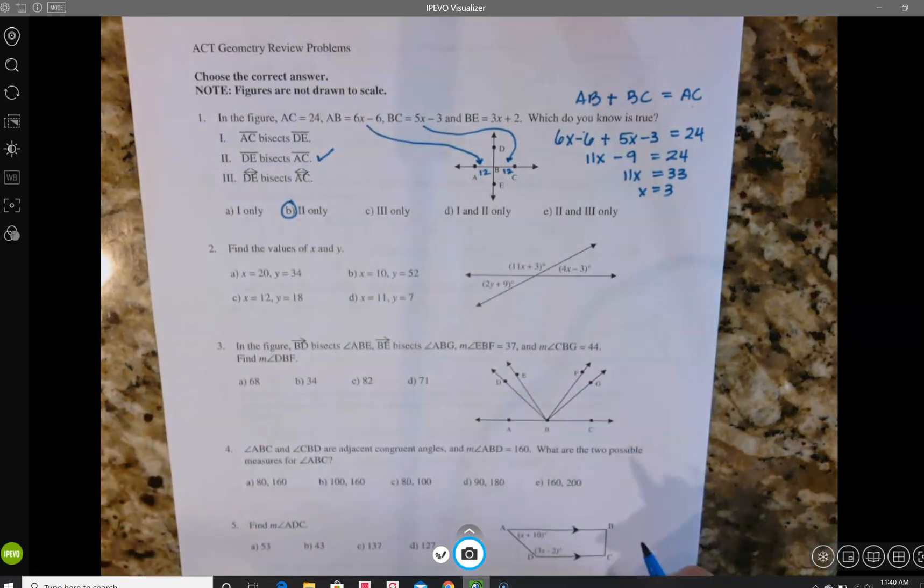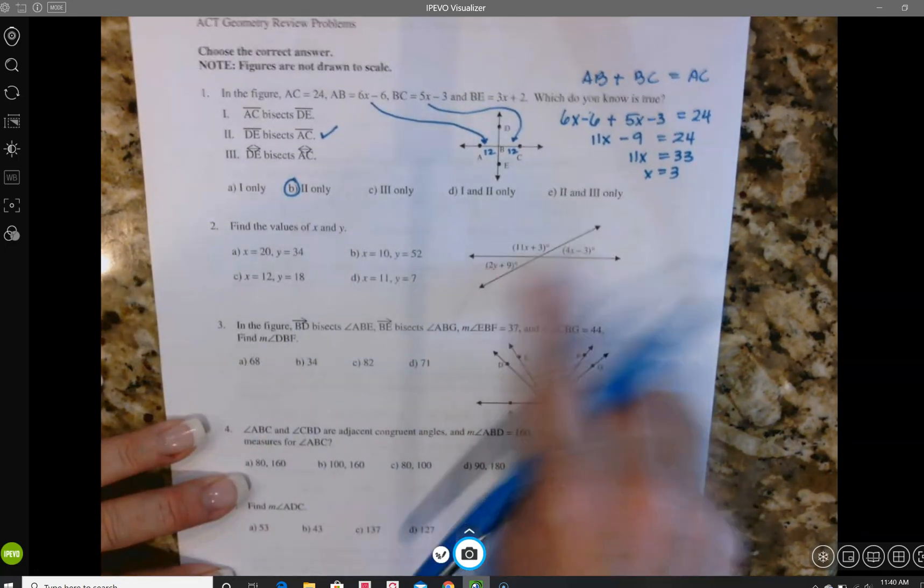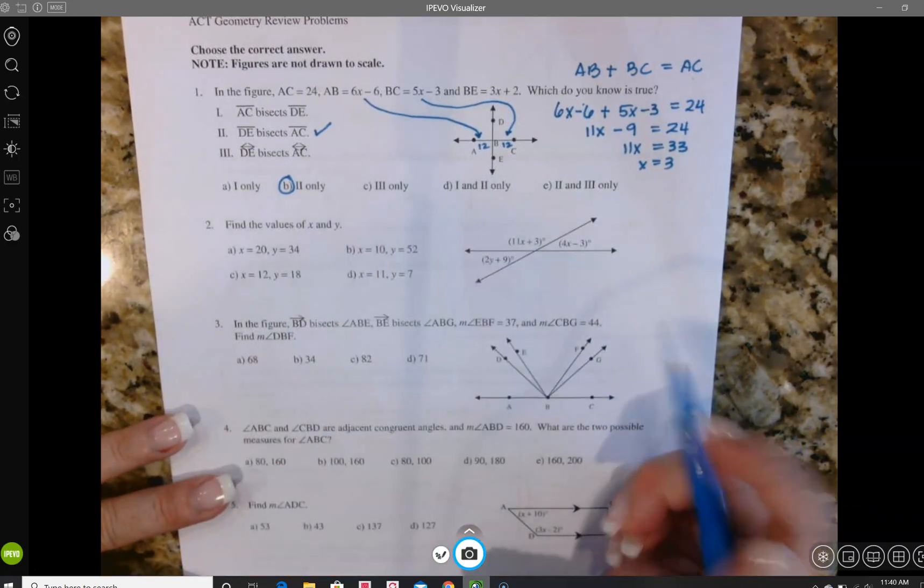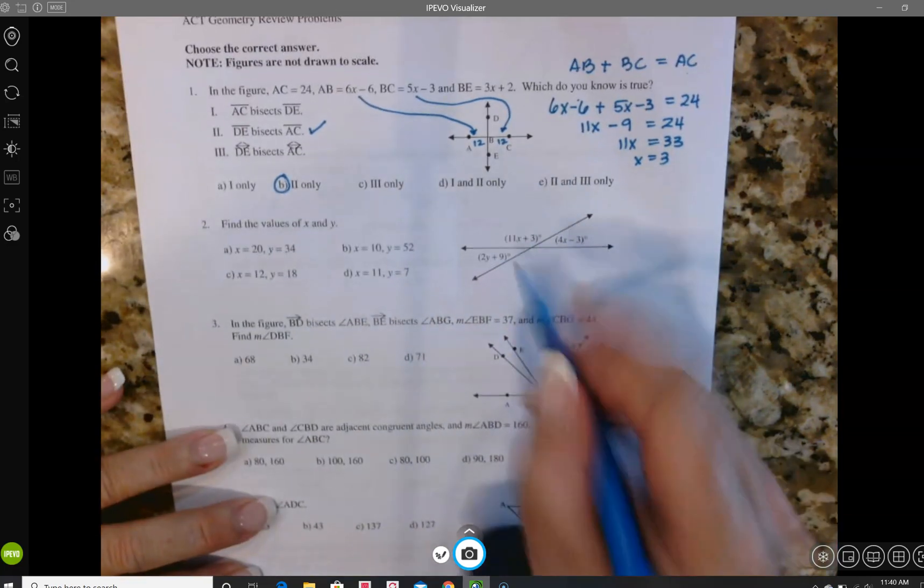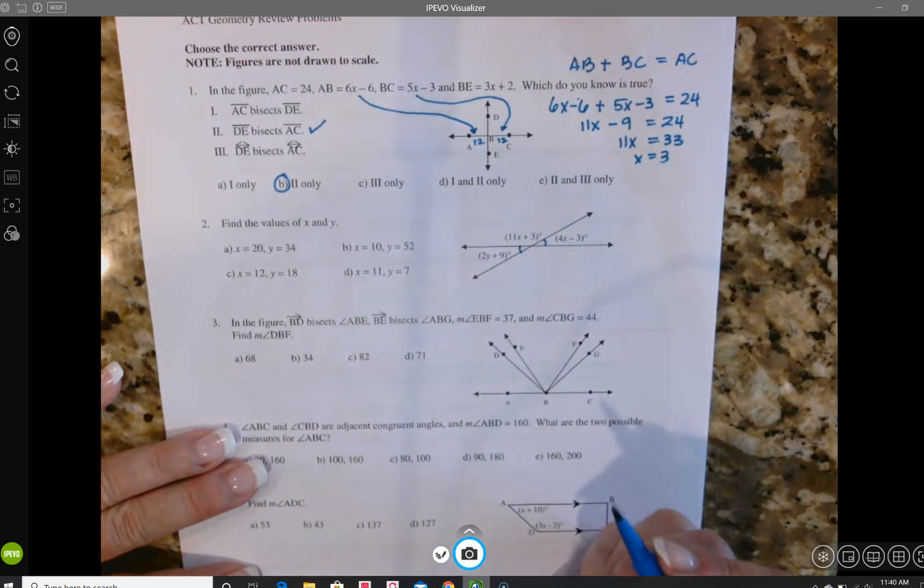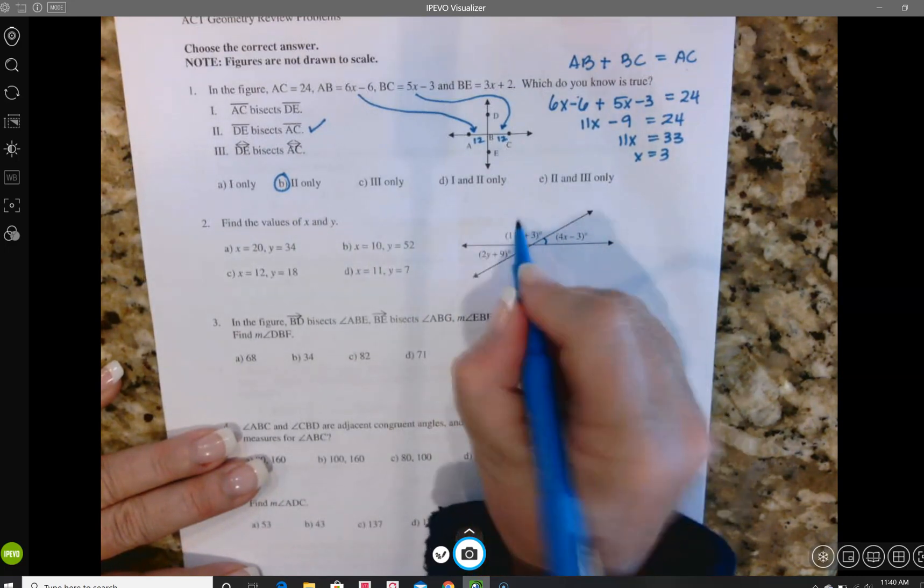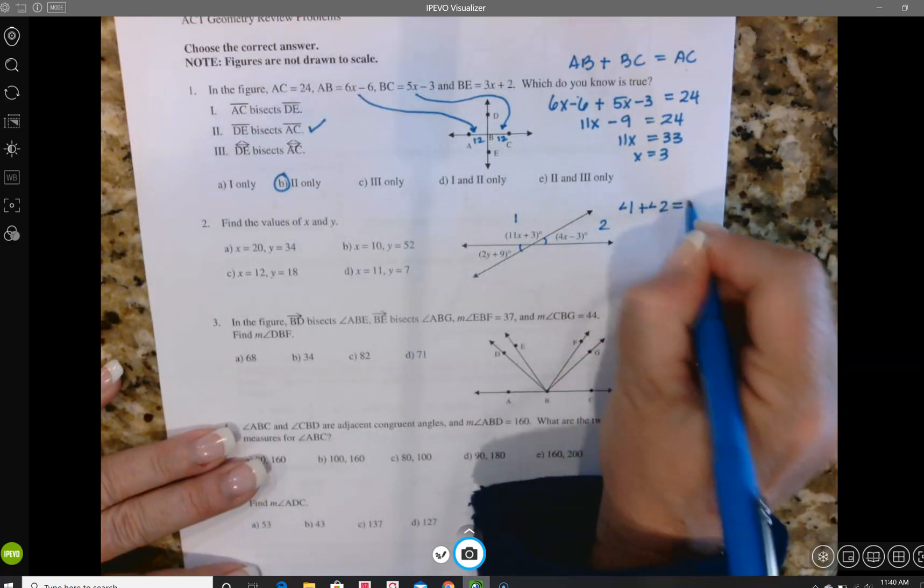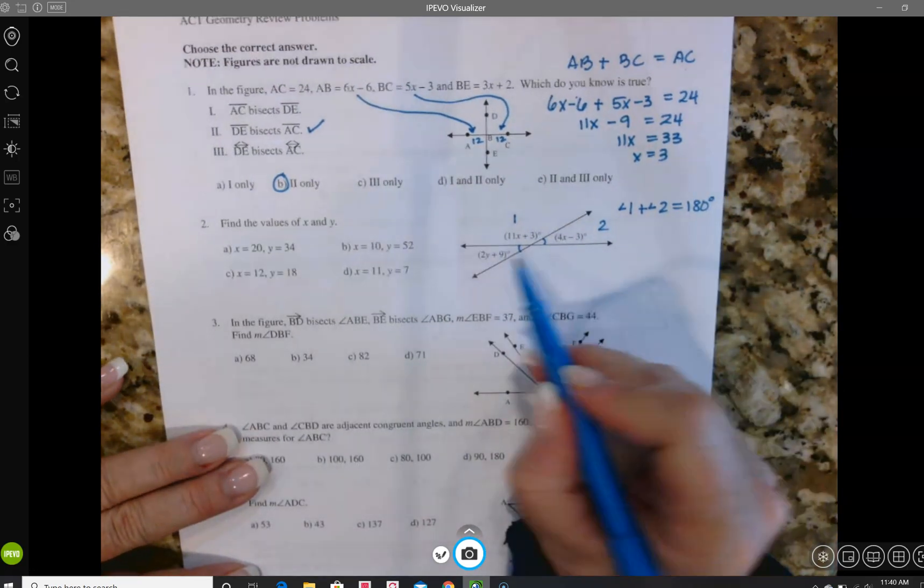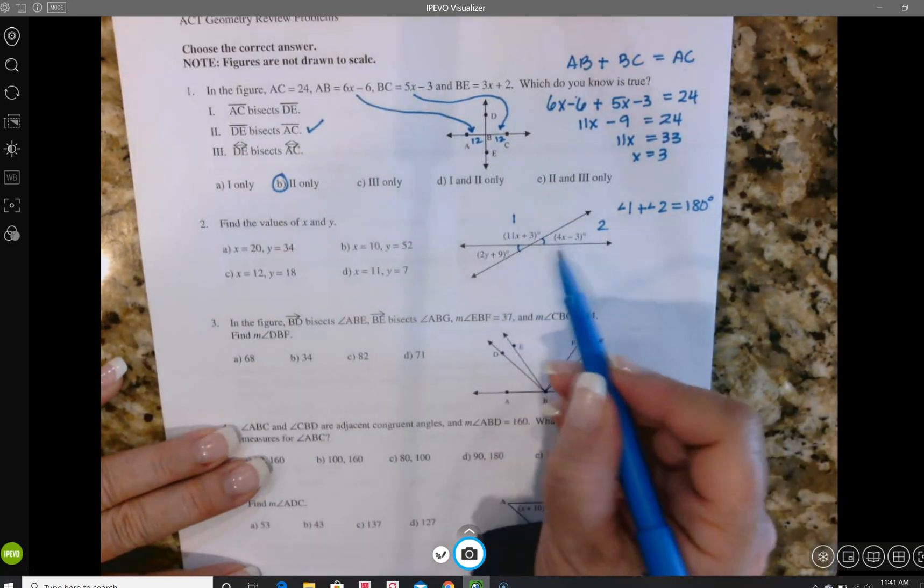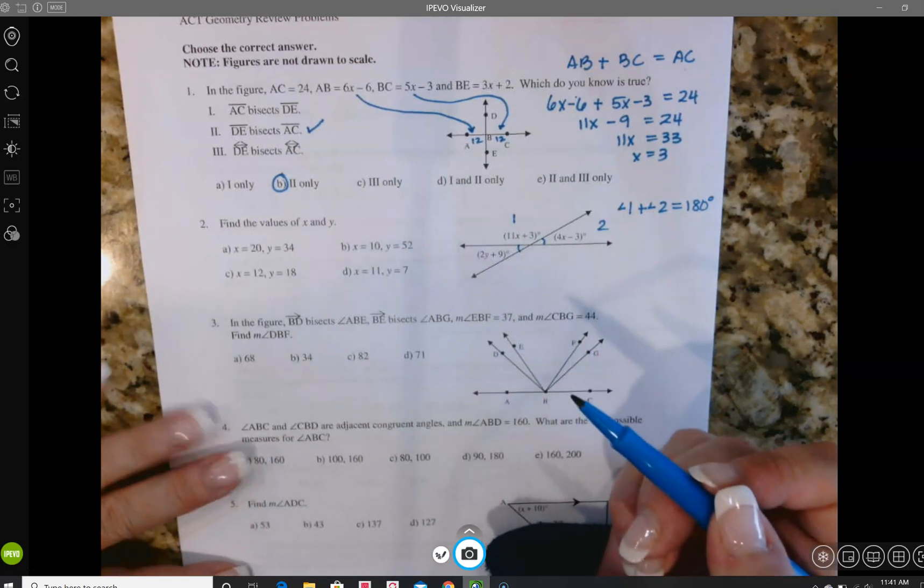So that's why choice B is the only correct choice. In number two we've got just a picture, we don't know any other details. So looking at my picture I see two lines that are crossing each other and I see a couple of my vocabulary words. I see some vertical angles and I also see a linear pair. So if I call this angle 1 and this angle 2, angle 1 plus angle 2 is a linear pair, so that adds up to 180 degrees. So I could either set my vertical angles equal, the only issue is that there's an x in this expression and a y in that expression so I wouldn't be able to solve it.